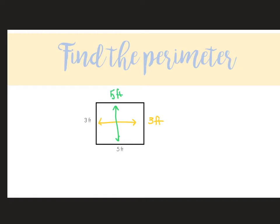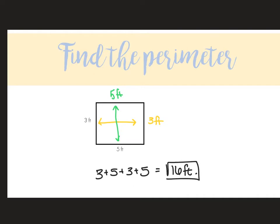Once I have everything labeled, I can add up all the sides, so I have three plus five plus three plus five. So the perimeter of this rectangle is 16 feet.